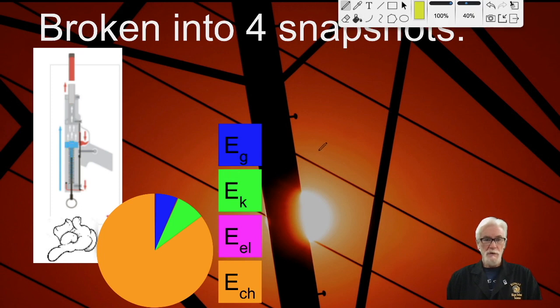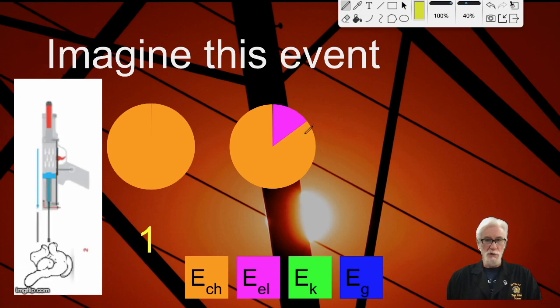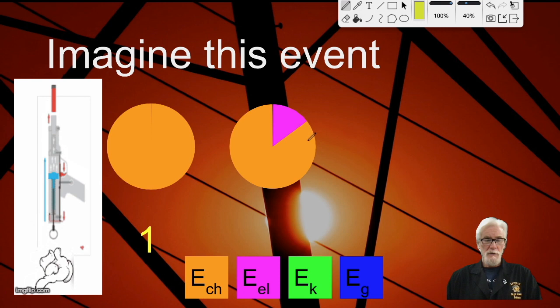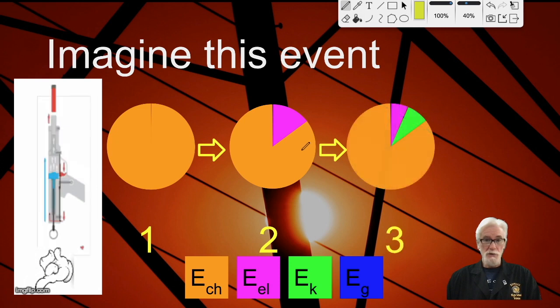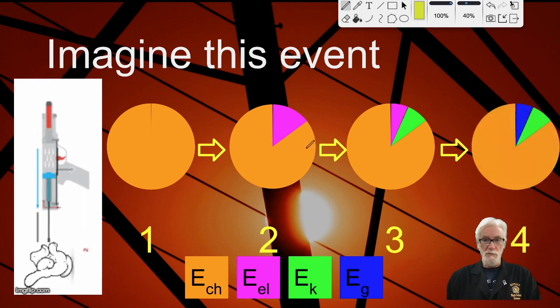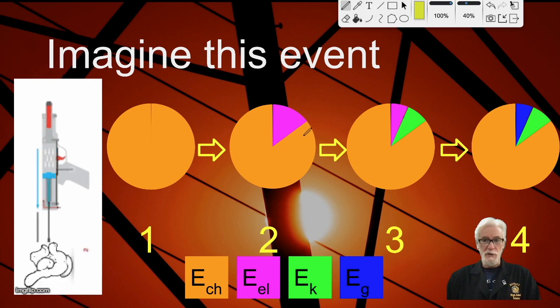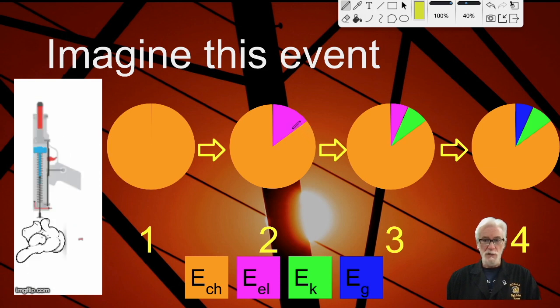Let's put these all together in sequence. At first, all the energy is stored as ECHEM in the blood sugar of the person doing the action. Then, as that person arms the spring, some of the ECHEM becomes stored as elastic energy. After that, the elastic begins to transform to kinetic, and it loses elastic as the spring unwinds. Finally, when the spring is completely unwound and the dart has left the gun and began to rise through the air, gravitational energy begins to increase and kinetic energy begins to decrease.